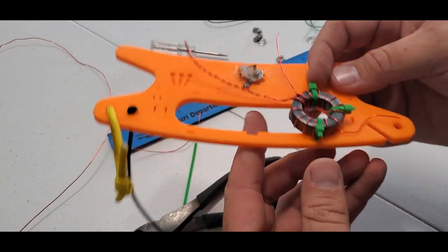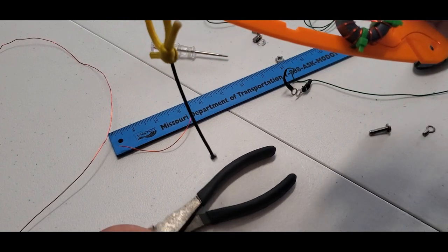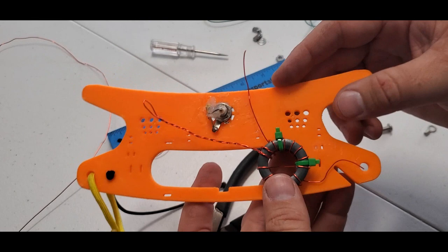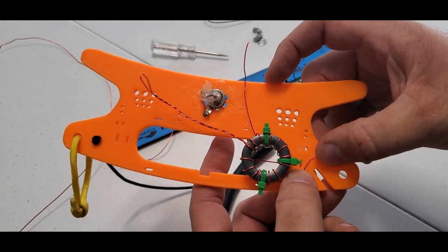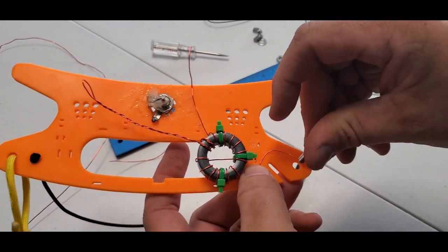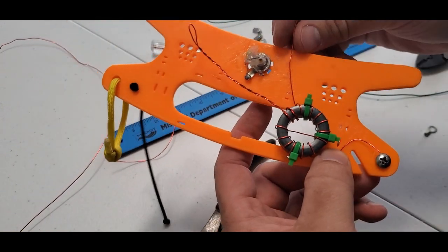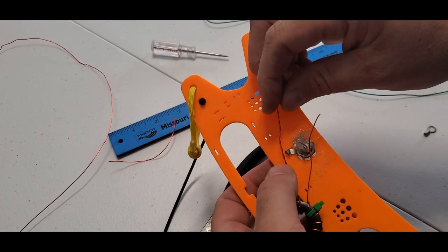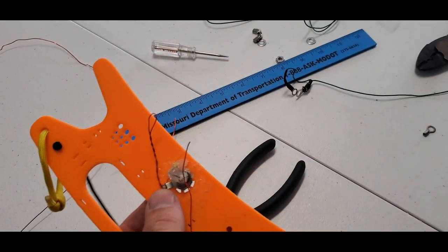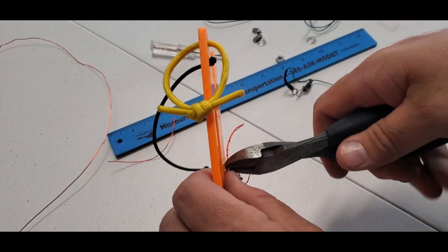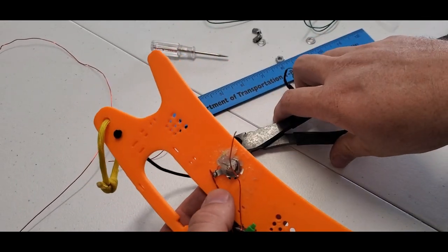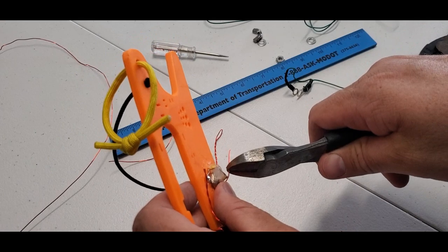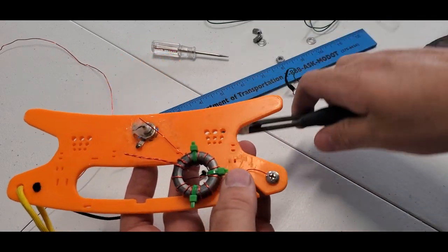All right, so once we got the zip ties tight, we're going to cut those off. Discard the extra pieces that we don't need. Then we're going to size up our wire. We're going to have one wire that comes around and connects to the screw, the next wire is going to attach to that center, and then the double wire is going to attach there. We're going to snip that off right about where it needs to be so it can be soldered.